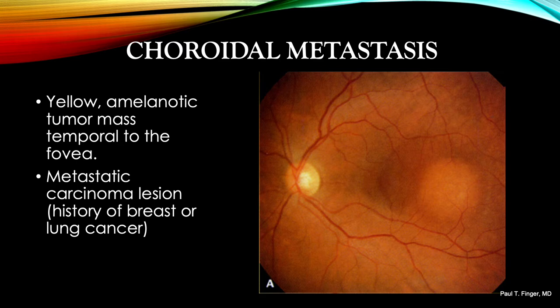Choroidal metastasis is the most common intraocular malignancy. It typically comes from either the breast in women or lung in men. However, prostate, kidney, thyroid, and other metastatic primaries occur. That is why the patient's medical history is so important. Many of the patients will have had systemic cancer or cancers. In terms of imaging, most metastatic choroidal cancers grow quickly, are yellow, poorly demarcated, low-lying, and exude subretinal fluid.